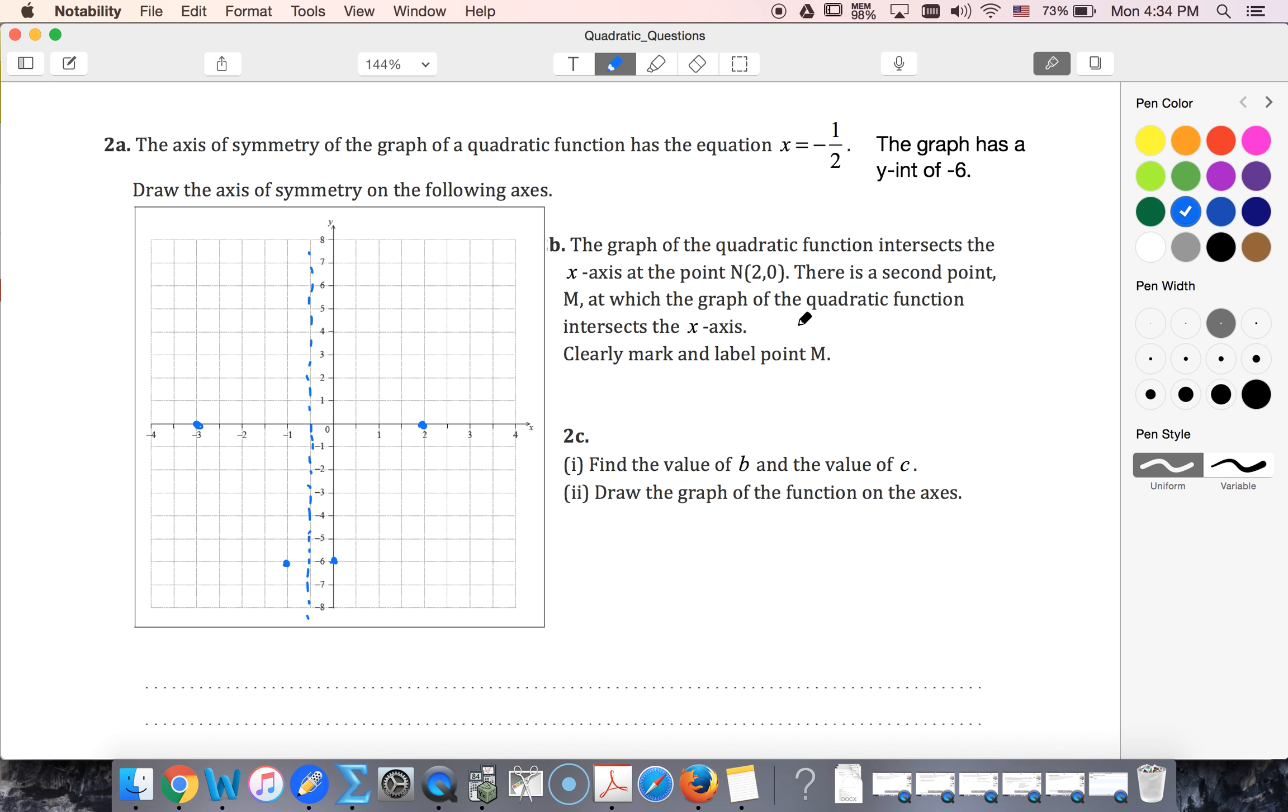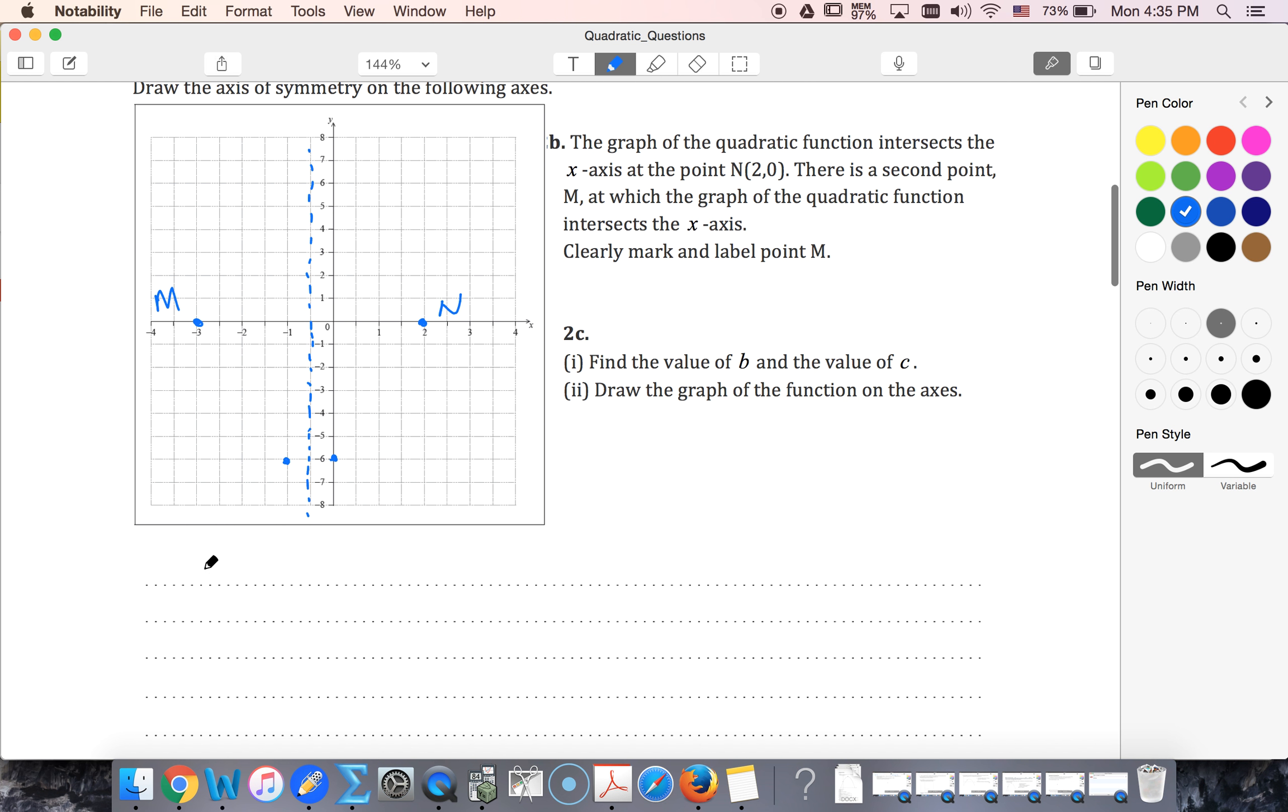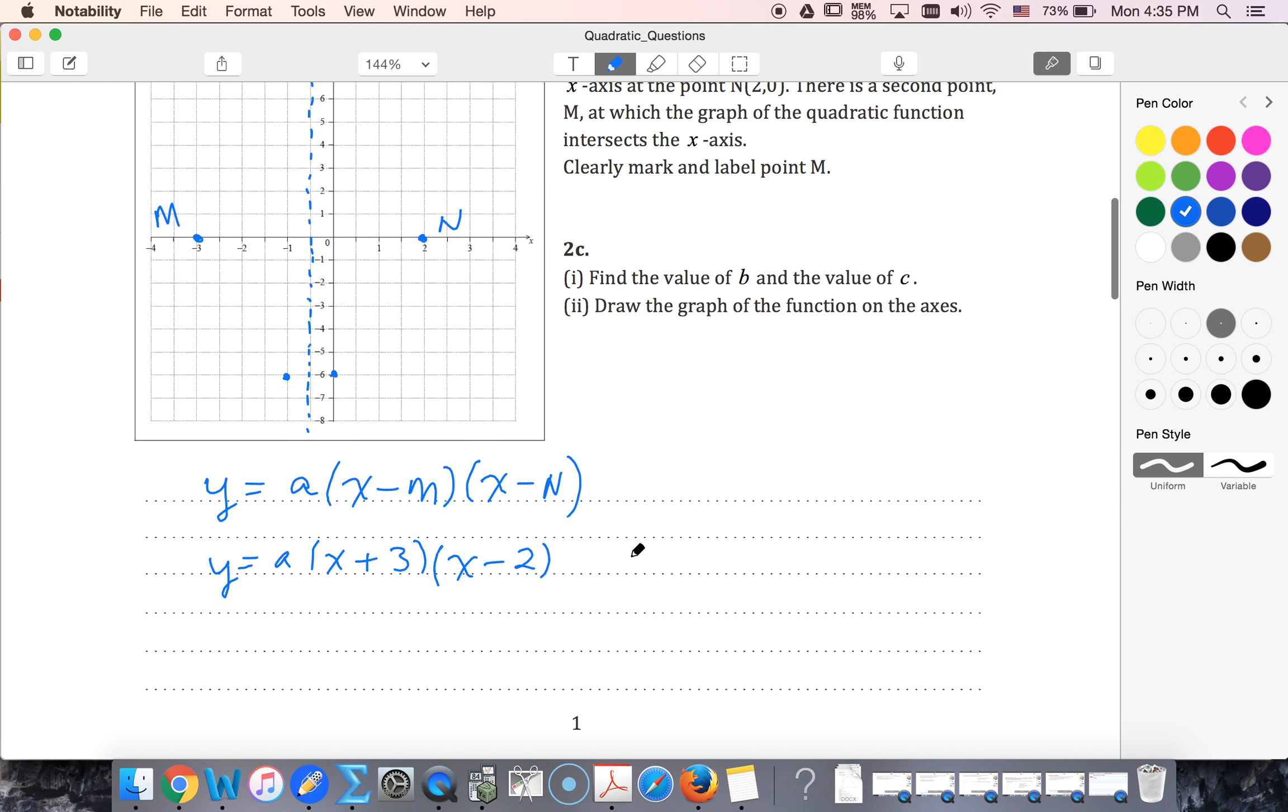Okay, using all of this, the second point M must be over here. Here is point N. Find the values of b and c. Well, I know that I'm going to have my root form a times x minus m times x minus n for my formula. I've got my m value is negative three, so minus negative three makes plus three, and then I have x minus two. I know that I go through the point zero, negative six.